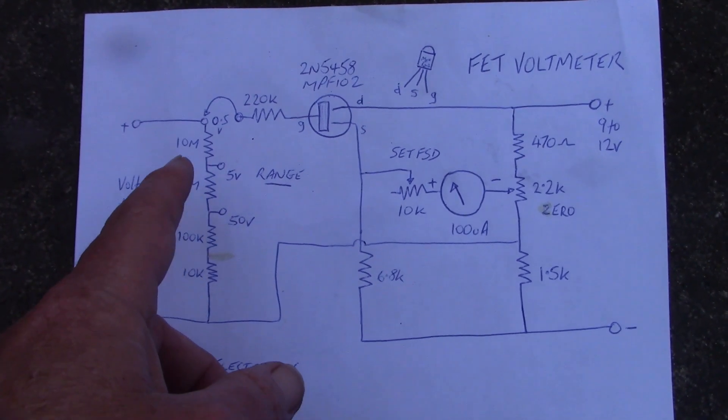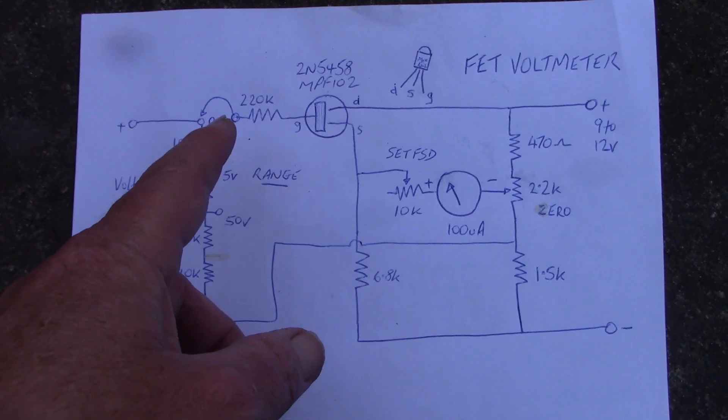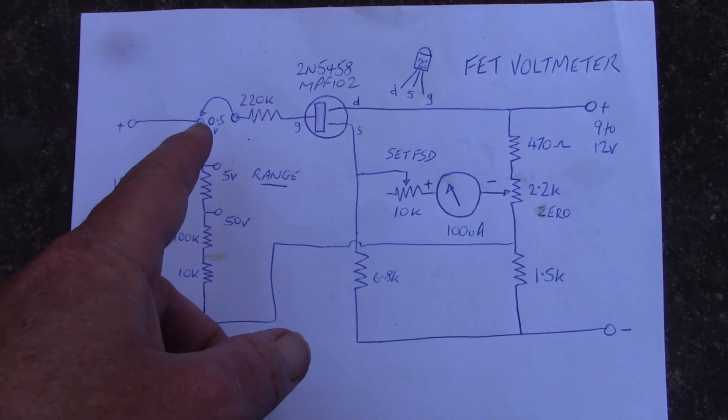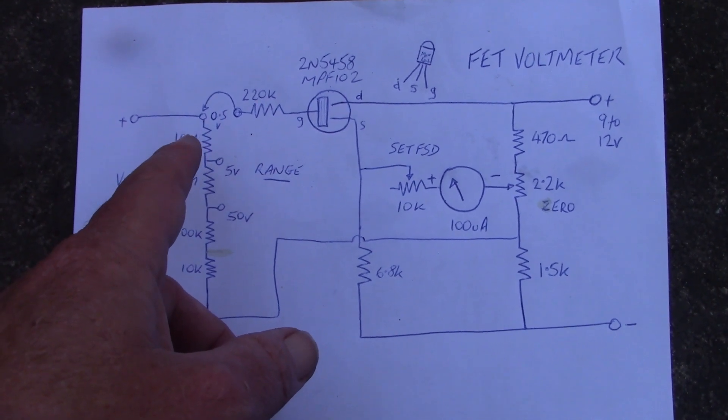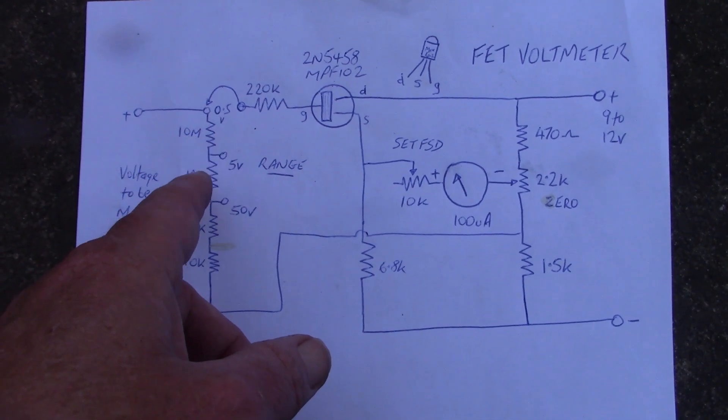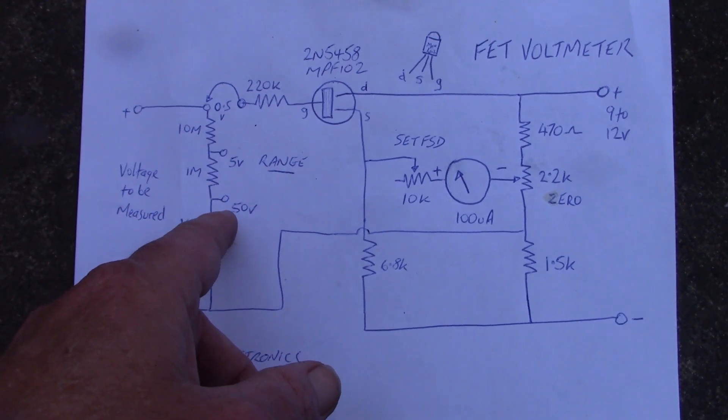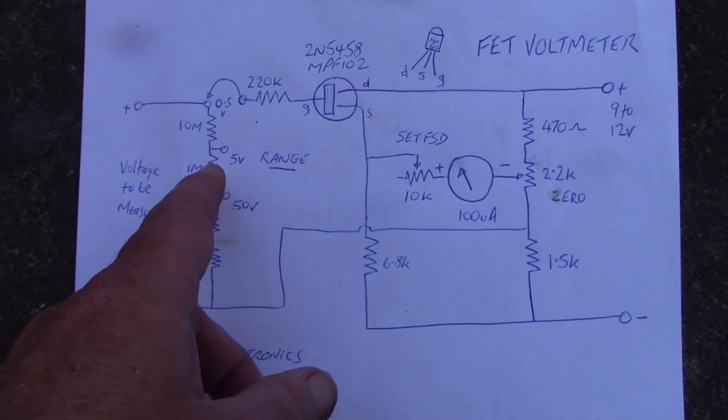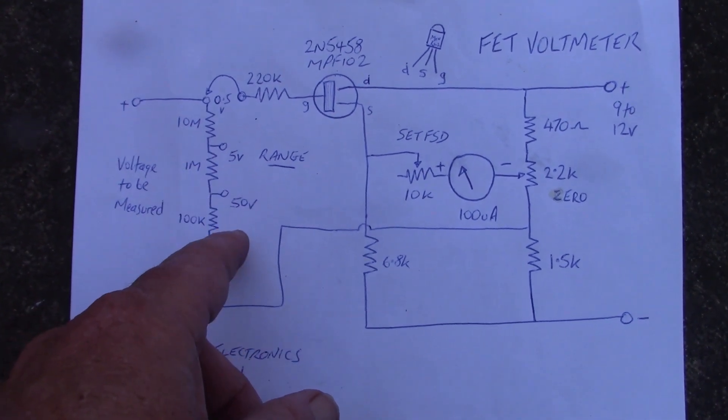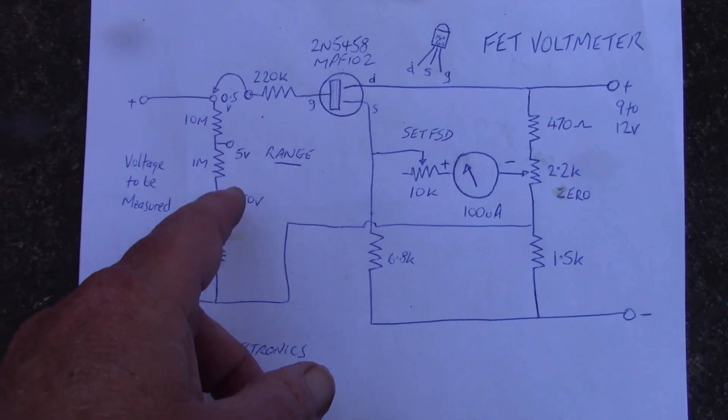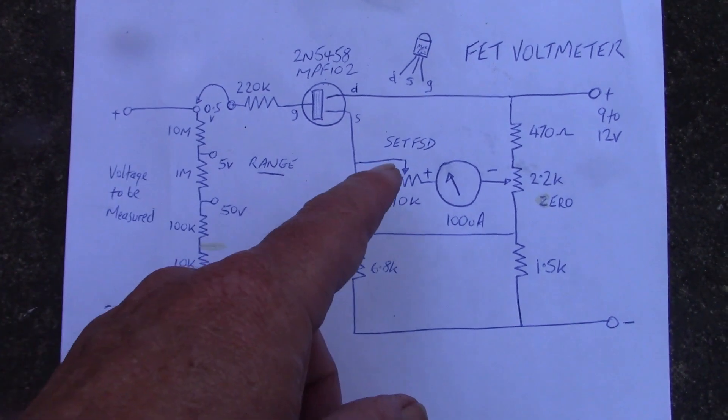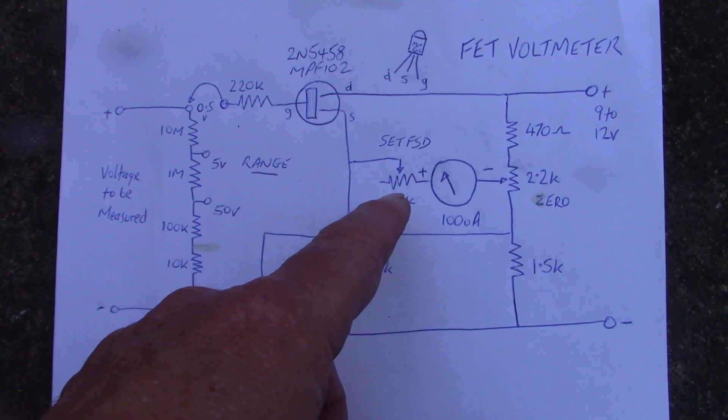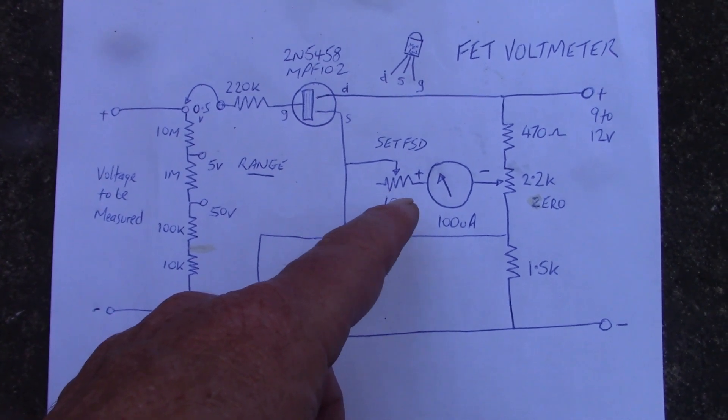Then you've got a 1 meg and then a 10 meg. And with this tap here, this is at 0.5 of a volt maximum, but you can tap down if you want. You've got a 5 volt range and a 50 volt range. If you wanted to, you could vary the resistors and then you can get different ranges to this. I will use this control here to adjust the sensitivity.